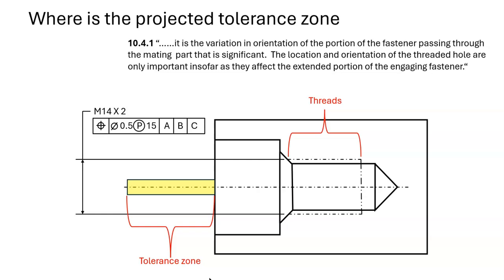In section 10.4.1, it says that it is the variation in orientation of the portion of the fastener passing through the mating part that is significant. The location and orientation of the threaded hole are only important in so far as they affect the extended portion of the engaging fastener.